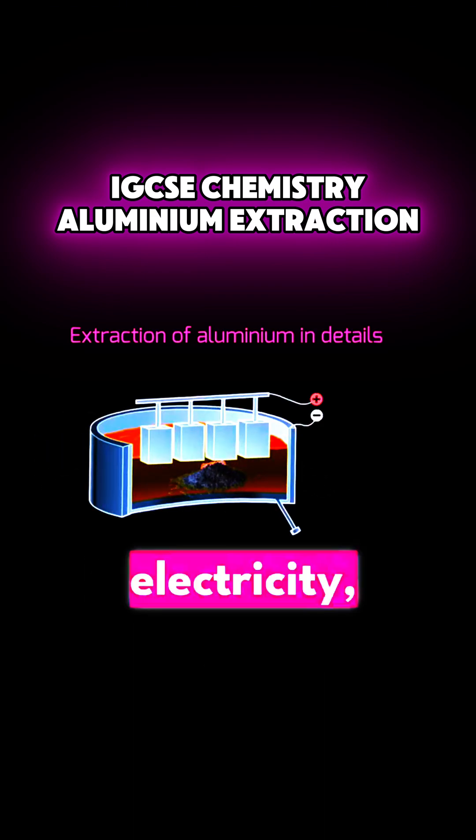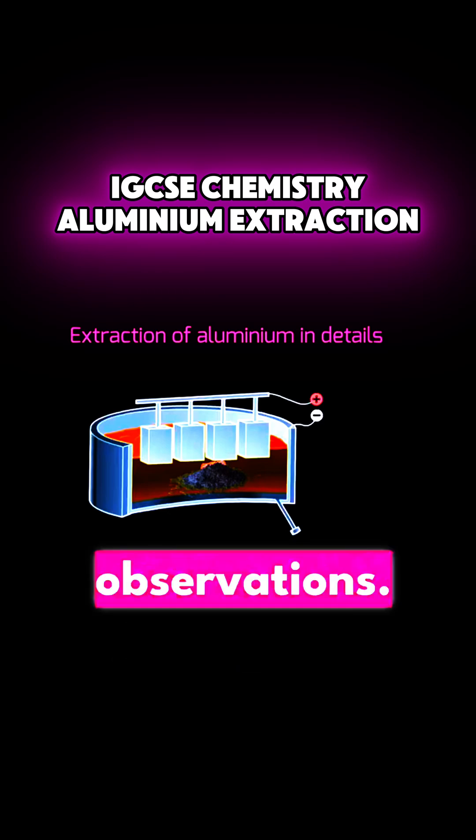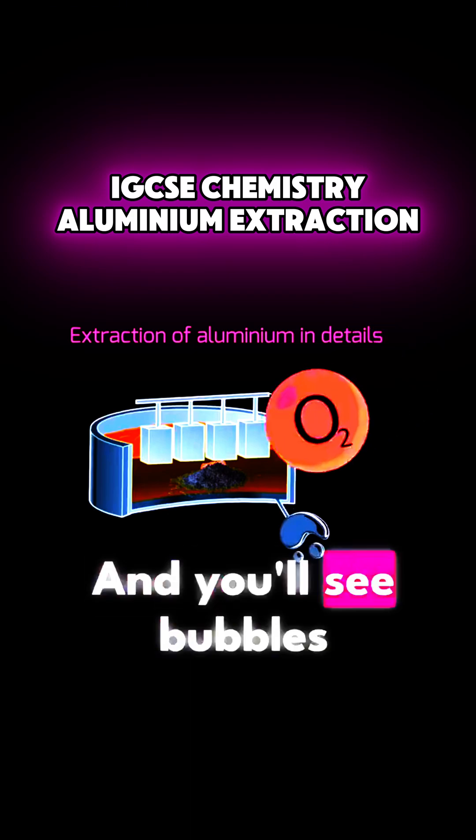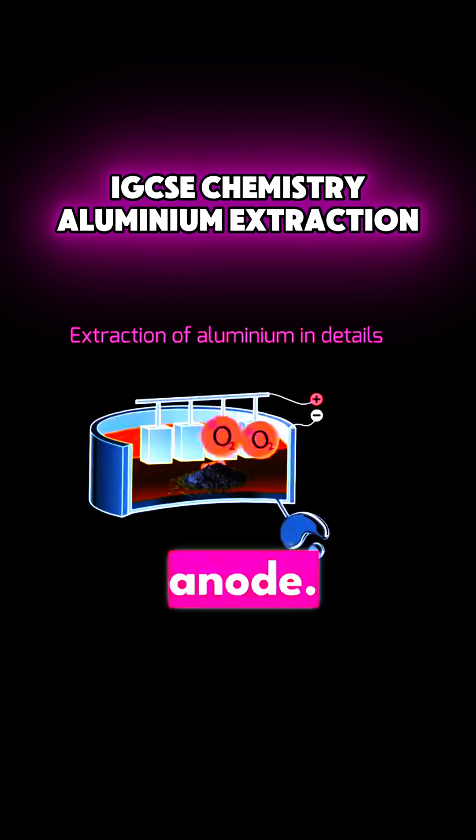As we turn on the electricity, you would start to see observations. The first thing you'll notice is that there is aluminium metal forming there at the bottom side. And you'll see bubbles of oxygen forming at the anode.